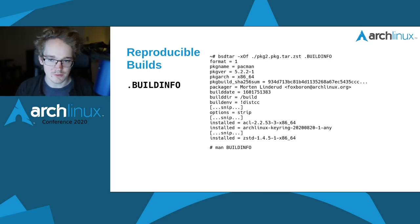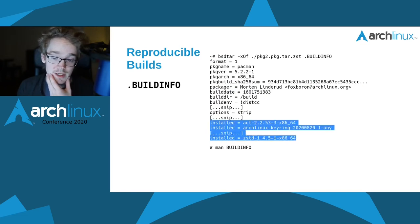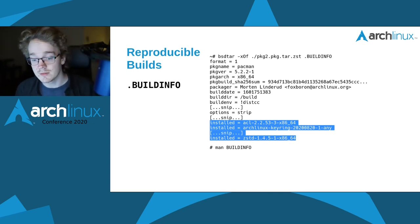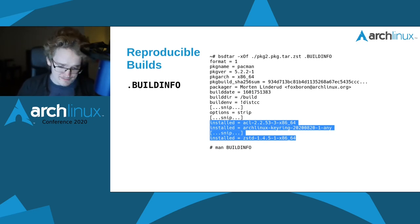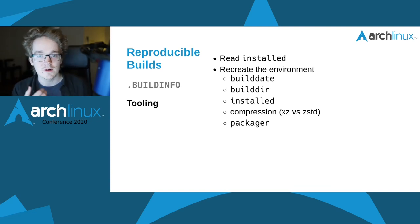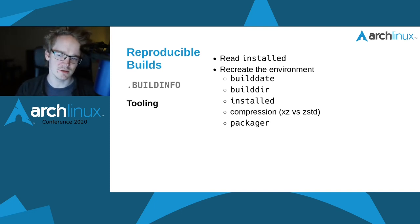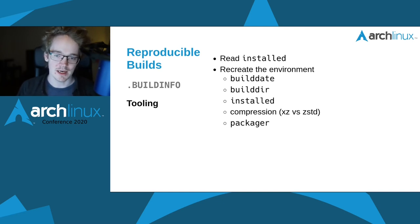We also have the .BUILDINFO file — a bill of materials that denotes all the different things that go into the build. It includes the package names, package versions, architectures, the checksum of the package build, build date, build directory, and all the dependencies. This format is described in the man page for buildinfo. To provide user tooling you have to read this file to have a recreatable environment, using the build date, build directory, installed packages, and which compression was used.